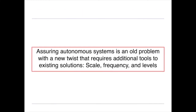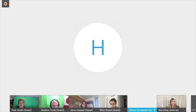In summary, assuring autonomous systems seems like an old problem but there's a new twist that requires additional tools and solutions due to the scale, frequency, and different levels of assurance that need to be handled.